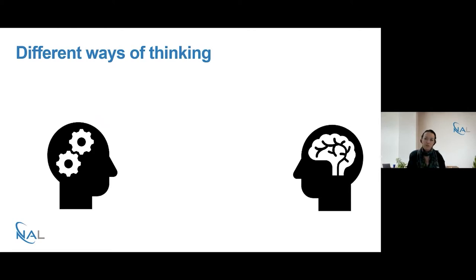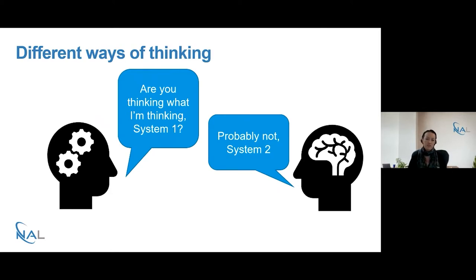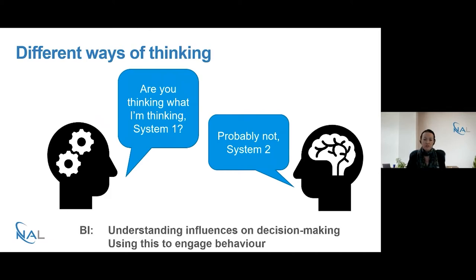But System 2 is fairly resource intensive and most of the time it prefers to hand over to System 1, which is a lot more fast, automatic and intuitive. Most of the time this balance of duties shared between the two systems works pretty well. But System 1 is a little prone to going for answers that are intuitive and coloured by biases, so the results from these two systems don't always line up the way we expect. BI seeks to understand not only those influences on decision making, but how we can use these to engage behaviour.